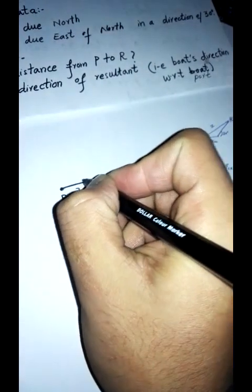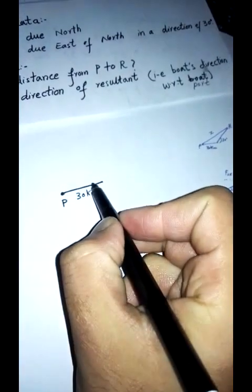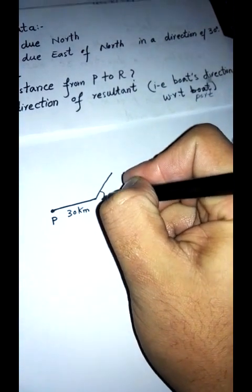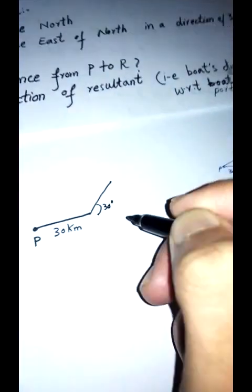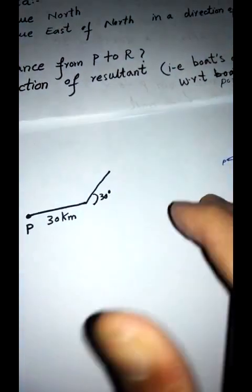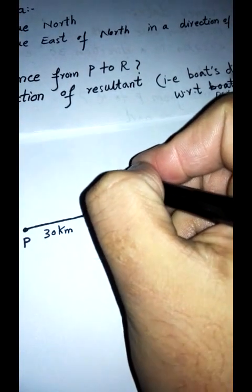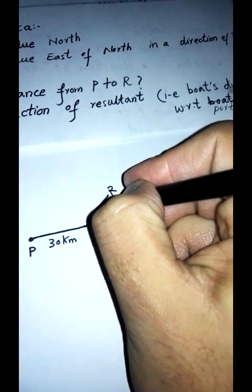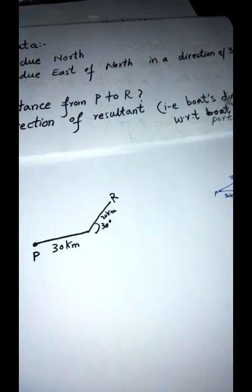It travels north. Let's suppose north direction. East is this way. It turns 30 degrees. The angle is measured in the clockwise direction, and then it travels to point R, which is 20 kilometers in that direction.